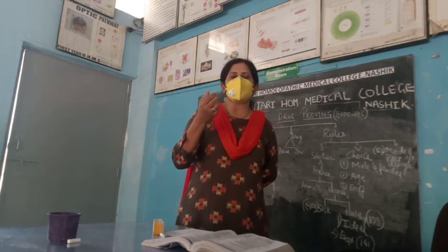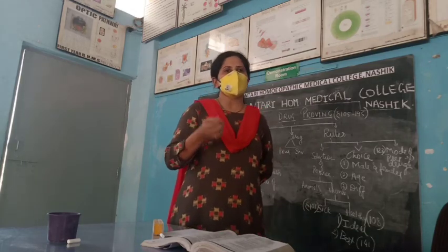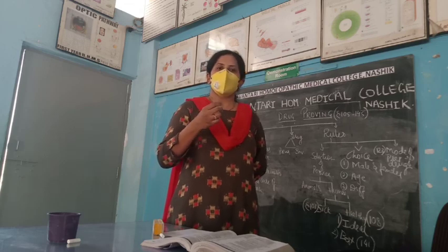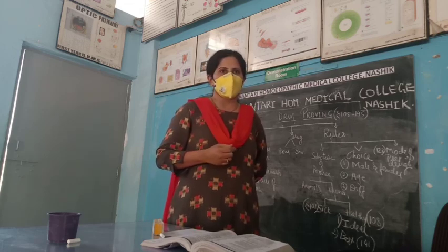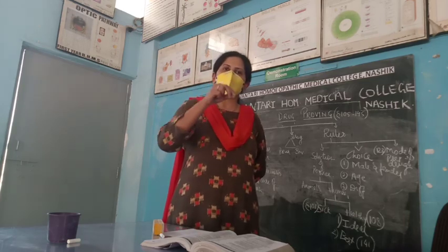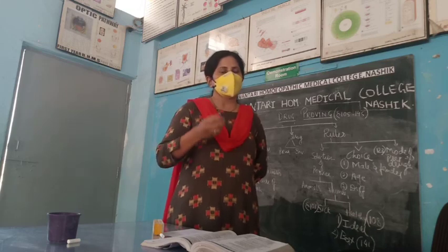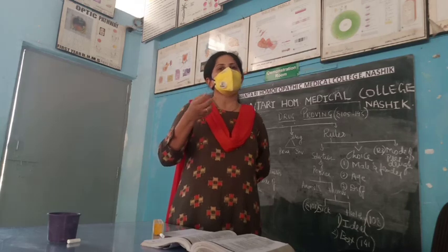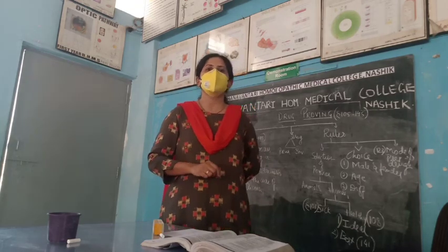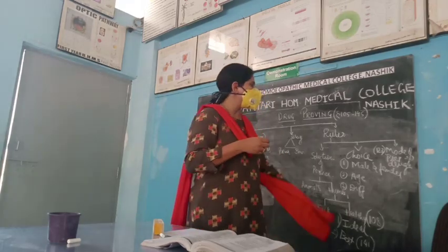If you have a drug which has been stored for a long time and its medicinal qualities have weakened, a decoction is made — the drug is taken, warm water is poured into it, kept for some time, strained, and then given to the prover to take. This is how the medicine is prepared for drug proving.